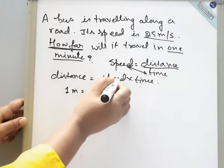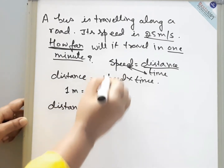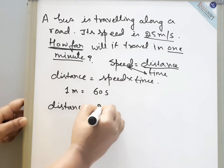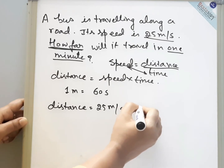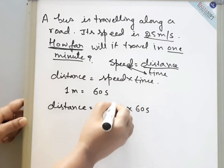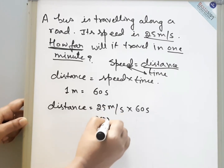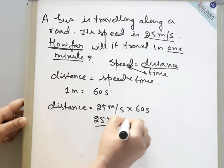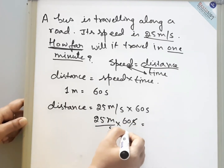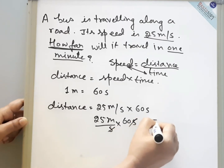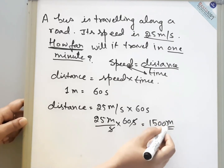Now we will put all these values in the formula. Our distance will be equal to speed, which is 25 meters per second, multiplied by 60 seconds. When we write the units properly: 25 meters per second into 60 seconds — second and second will cancel. So our answer will be 1500 meters. That is the distance covered.